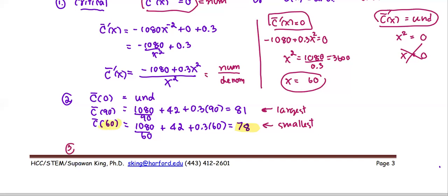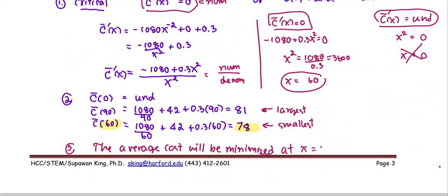Step three conclusion: the average cost function will be minimized at x = 60.